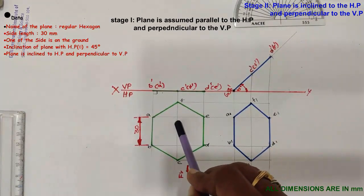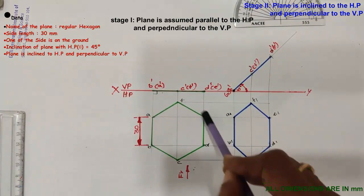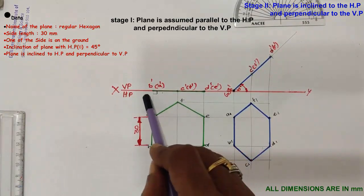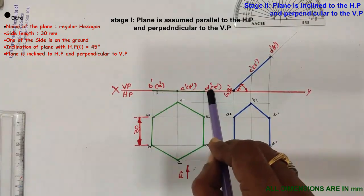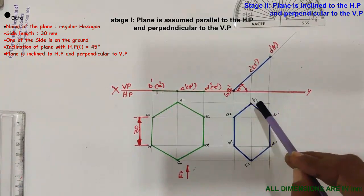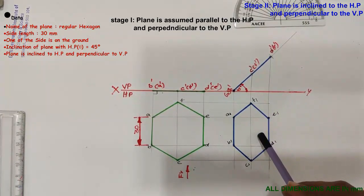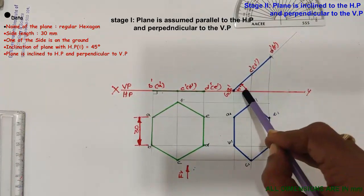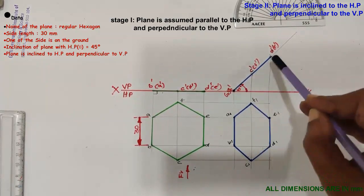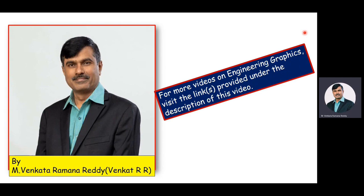To summarize: in Stage 1, the plane is parallel to the HP and perpendicular to the VP. In Stage 2, the plane is inclined to the HP at 45 degrees and perpendicular to the VP.